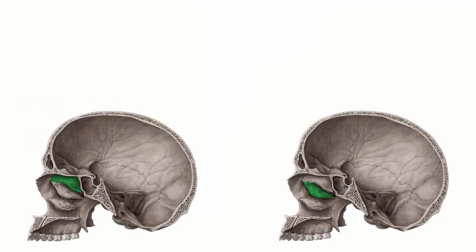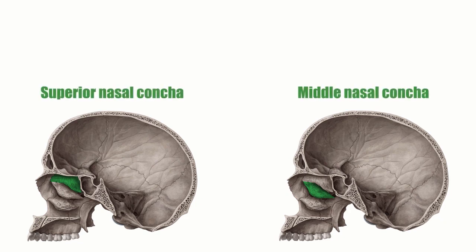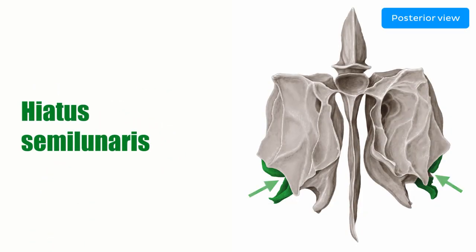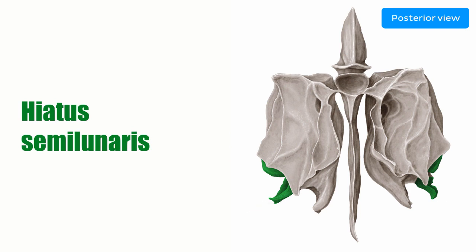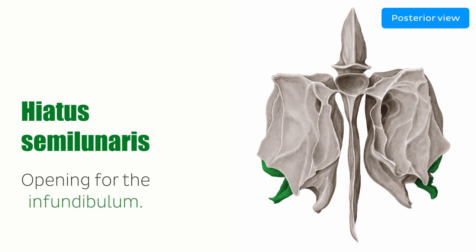The labyrinths form two of the biggest structures in the nasal cavity: the superior and middle nasal conchae. The hiatus semilunaris separates the ethmoid bulla and the uncinate process. It constitutes the connection between the frontal and maxillary sinuses to the anterior ethmoid cells, and also provides an opening for the infundibulum.